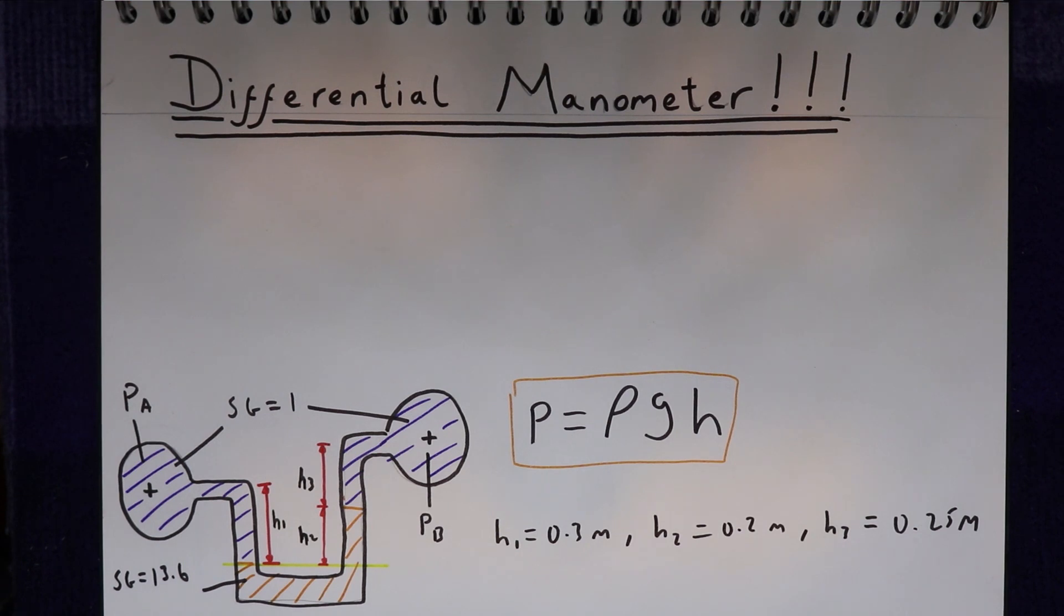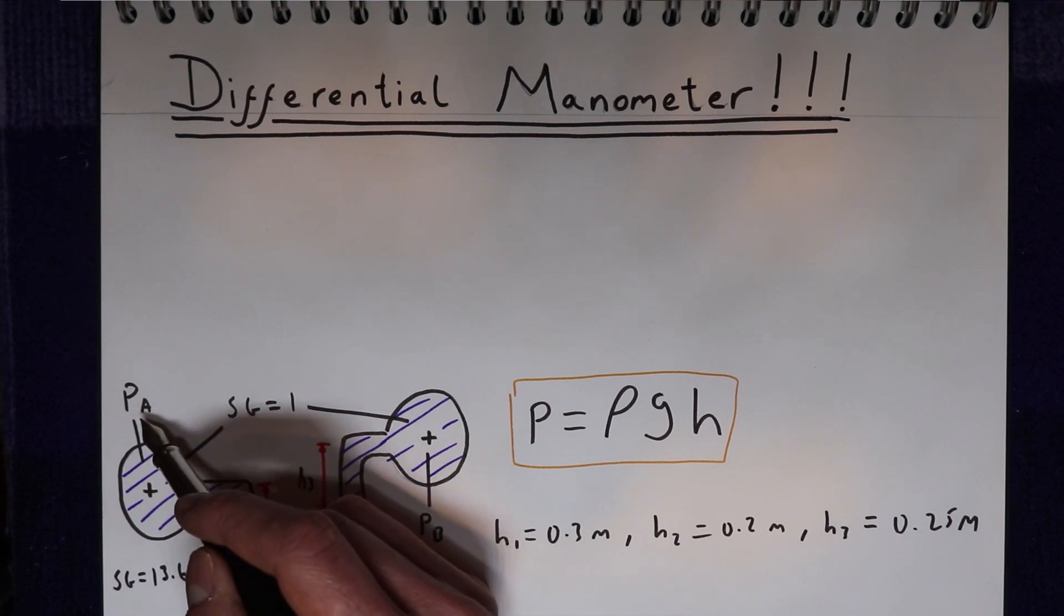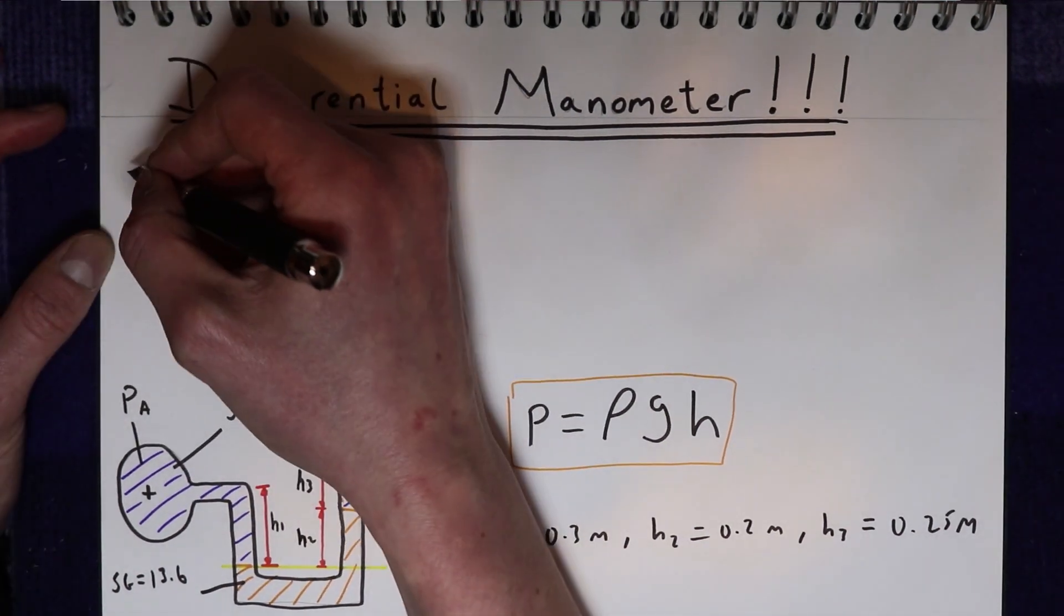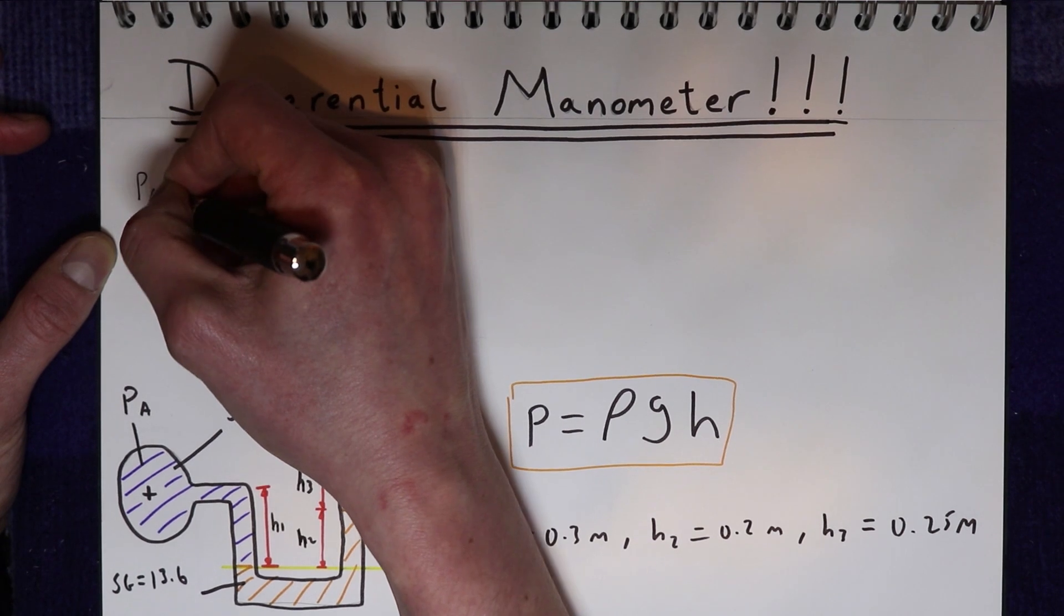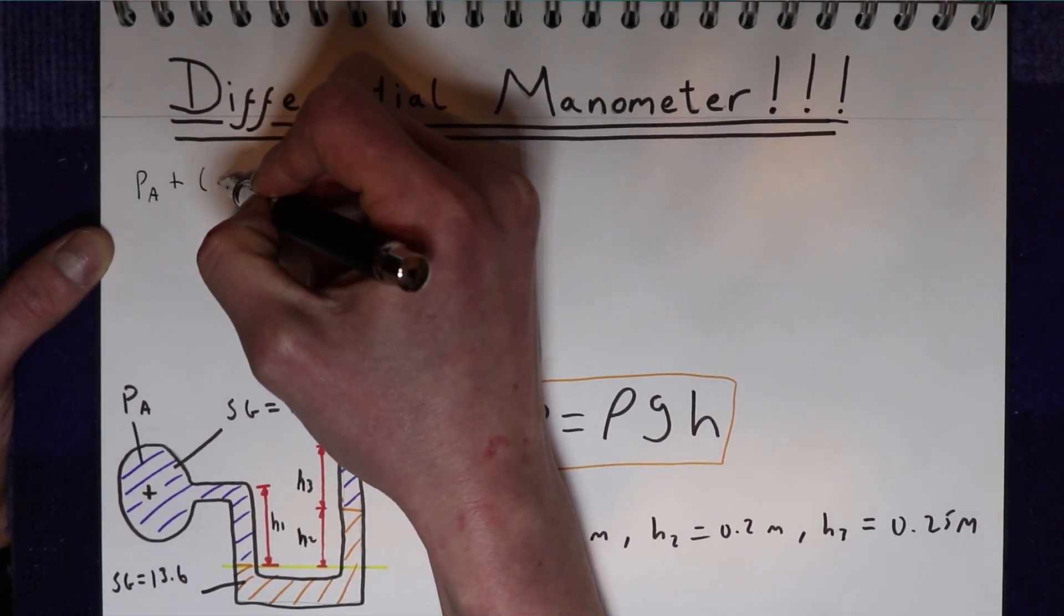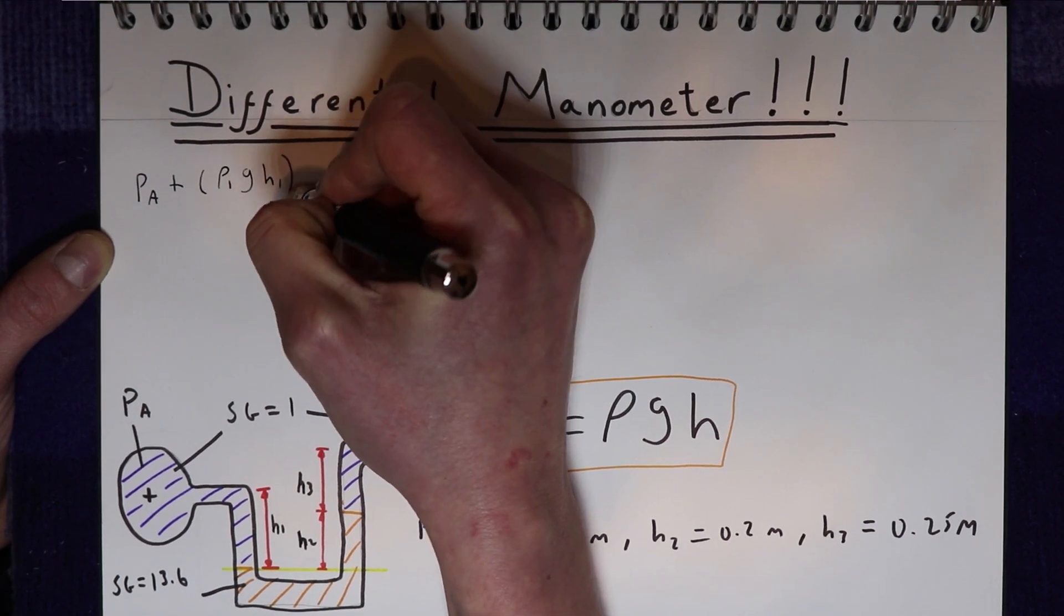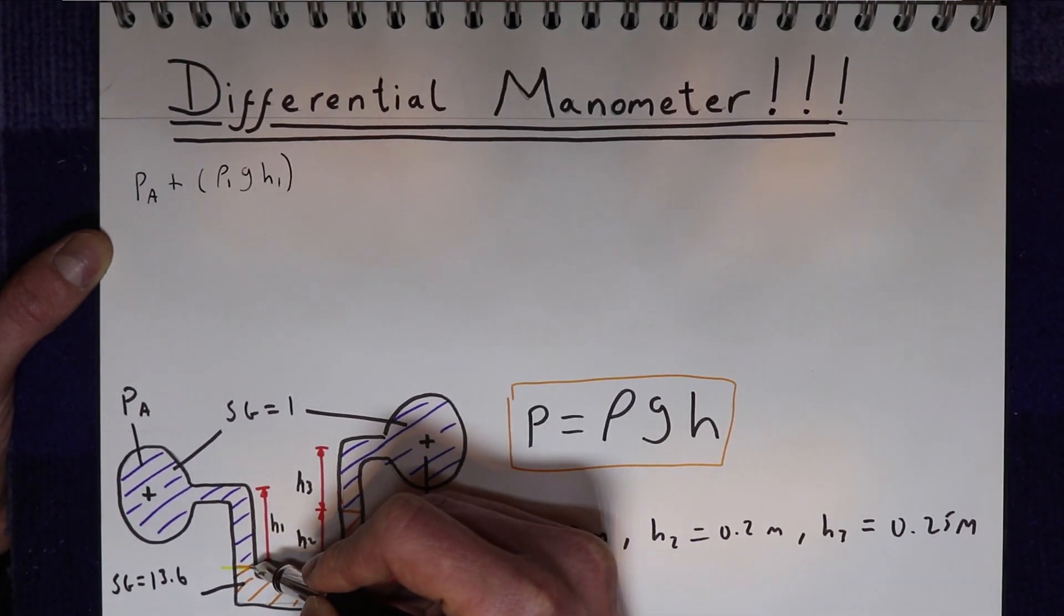So what we now need to do is equate the pressure pushing down on this side of the line with the pressure pushing down on this side of the line. So what pressure do we have pushing down on this side? Well, firstly we have Pa in this pipe. We then have the pressure from this column of water here. So that's going to be the density of water, we'll call it density 1 times gravity times H1. That's the total pressure pushing on this side of the line.